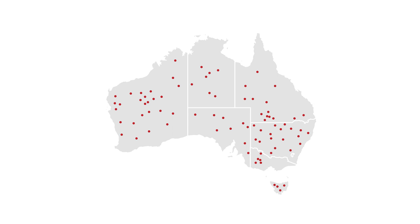Dot maps are ideal for seeing how things are distributed over a geographical region and can reveal patterns when the points cluster on the map. Dot maps are easy to grasp and are a better way of giving an overall view of the data, but are not great for retrieving exact values.